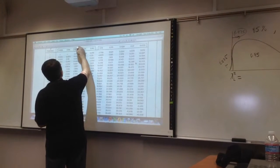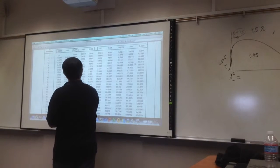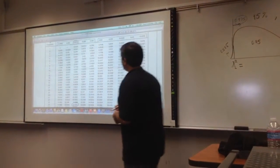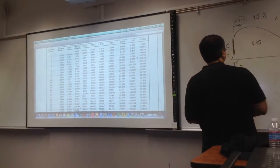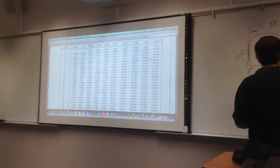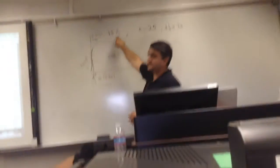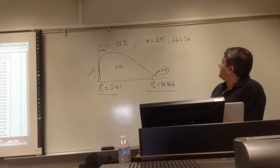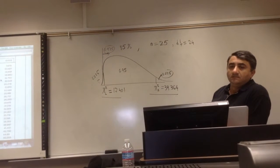Here, with 24 degrees of freedom, it's going to be 12.401. So we have two chi-square values that corresponds to a 95% confidence level with that degrees of freedom.